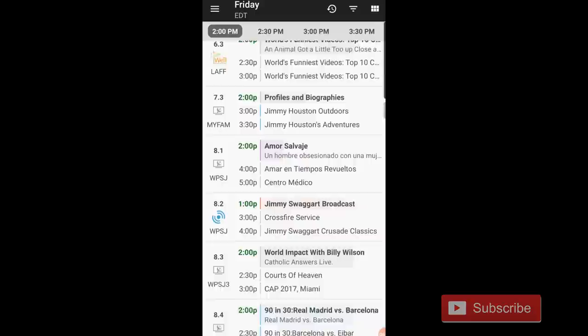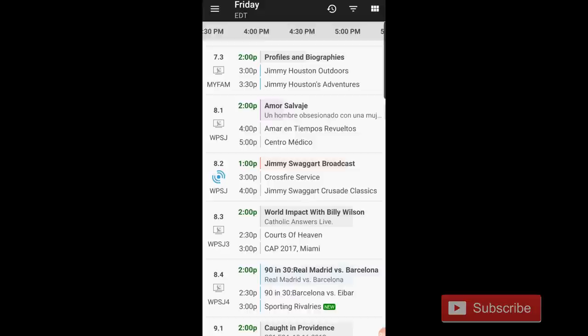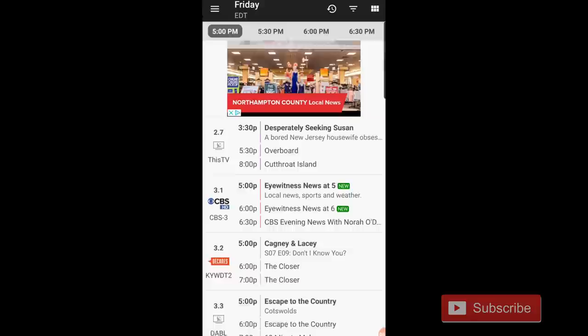There you have it, the list of TV channels that broadcast in your area, what's going on at certain times, so you can always just kind of scroll through to a later time. We can say five o'clock, see what's coming on at five o'clock, and just make your judgment from there.